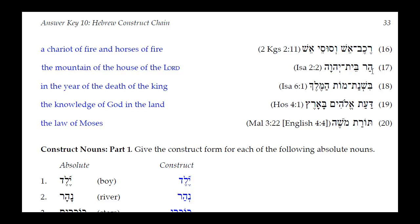Next: Har Beit Adonai. Normally there would be a Kamets on the Hay, but here we have a Patak, telling us it is a construct noun. So we have 'the mountain of the house of Adonai' — both in construct. Since Adonai is a proper noun, we apply the definiteness: 'the mountain of the house of Adonai.'